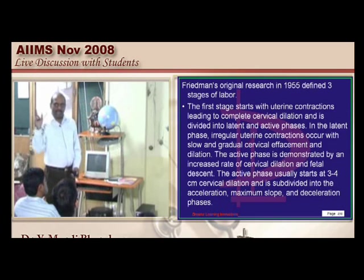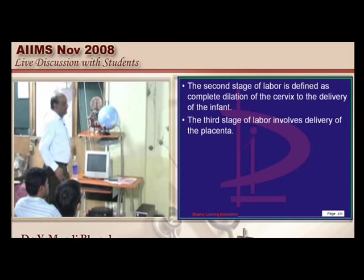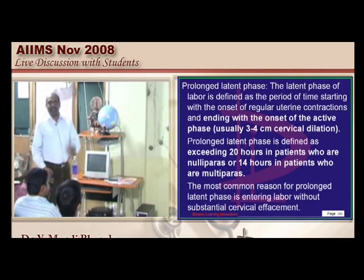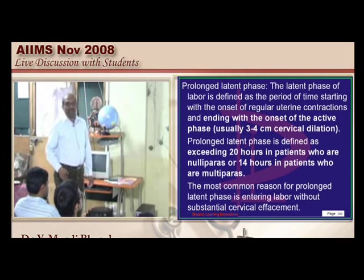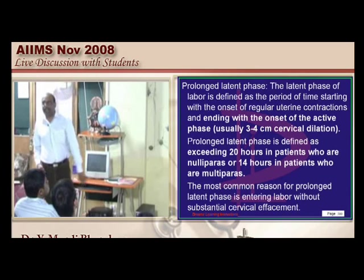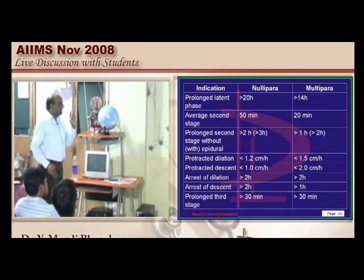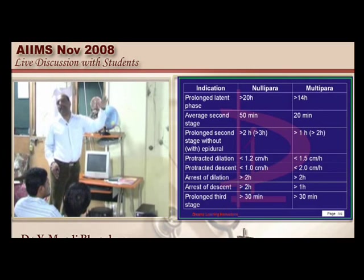When do you call it a prolonged latent phase? If a nulliparous female has a latent phase exceeding 20 hours, or a multiparous female exceeding 14 hours, you call it a prolonged latent phase. Abnormalities in labor progression include prolonged latent phase, prolonged second stage, protracted dilatation, protracted descent, arrest of dilatation, arrest of descent, and prolonged third stage.